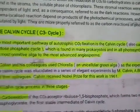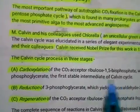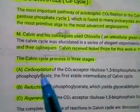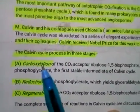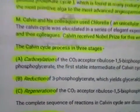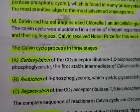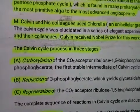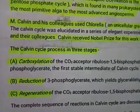The Calvin Cycle occurs in three steps. The first step is called Carboxylation, the second step is called Reduction, and the third step is called Regeneration.